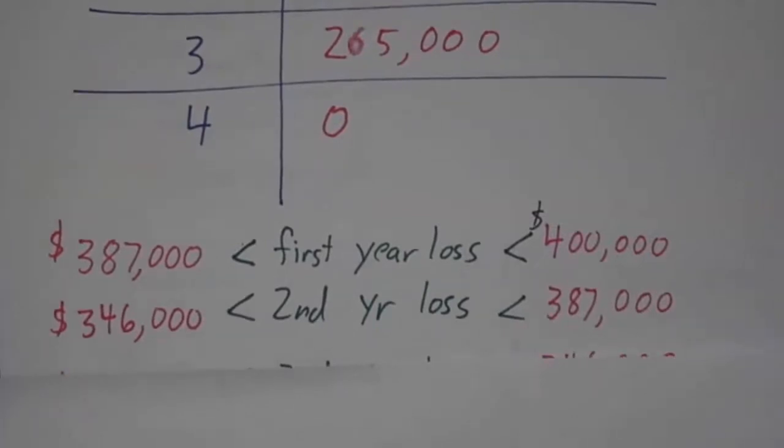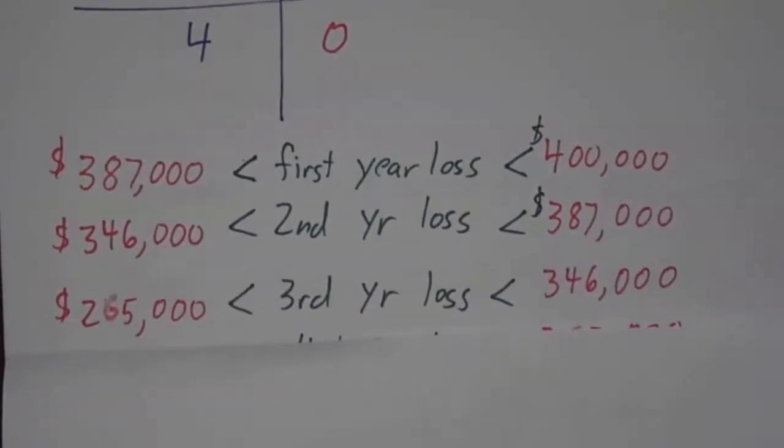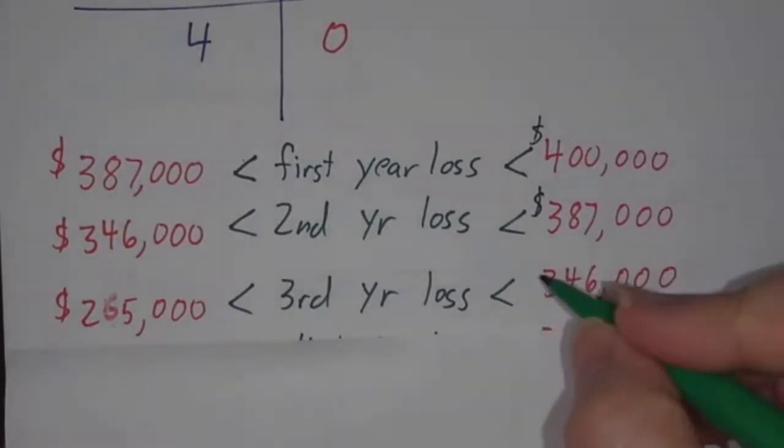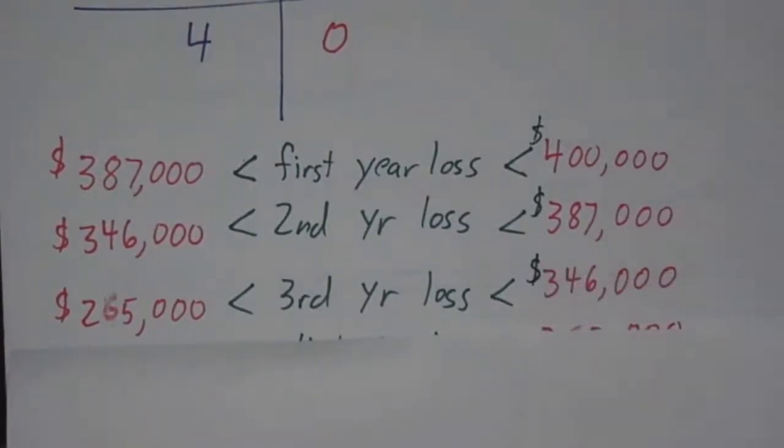In the second year, the amount of money that it lost was somewhere between $346,000 and $387,000. In the third year, the amount of money it lost is somewhere between $265,000 and $346,000.